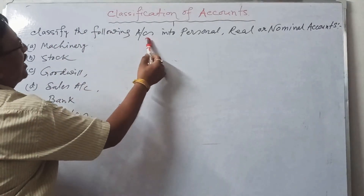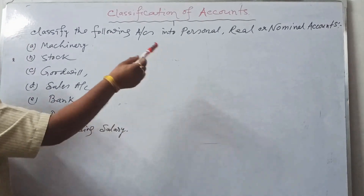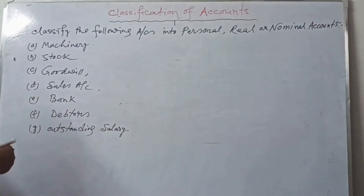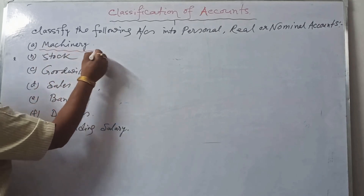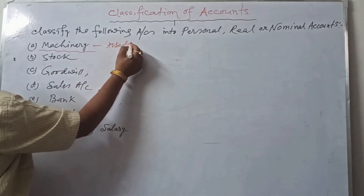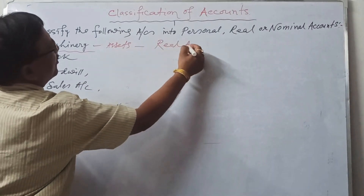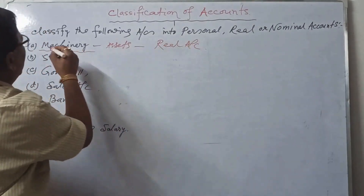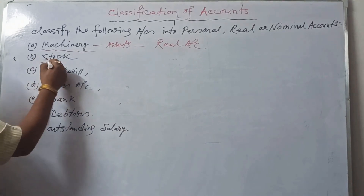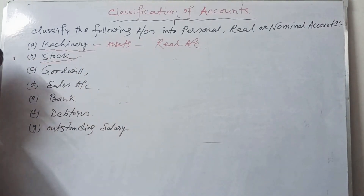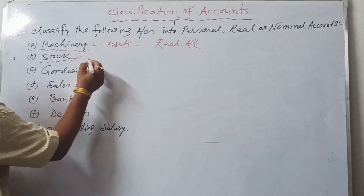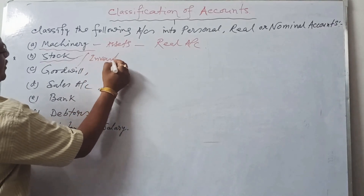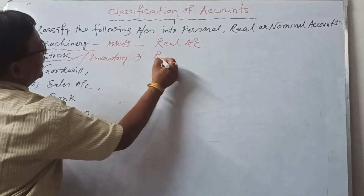Classify the following accounts. First, machinery account — machinery is a type of asset, so it is a real account. Stock (also known as inventory) is also a real account.